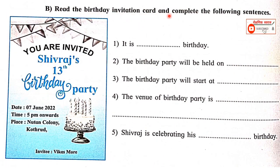Activity B: Read the birthday invitation card and complete the following sentences. You are invited to Shivraj's 13th birthday party. Date: 7 June 2022. Time: 5 PM and onwards. Place: Newton Colony, Kothrood. Invite: Vikas More. The first question is: it is Shivraj's birthday.